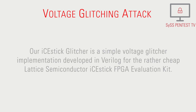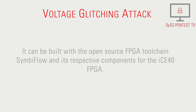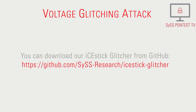Our iStick Glitcher is a simple voltage glitcher implementation developed in Verilog for the rather cheap Lattice Semiconductor iStick FPGA evaluation kit. It can be built with the open-source FPGA toolchain SimbiFlow and its respective components for the iStick 40 FPGA. You can download our iStick Glitcher from GitHub.